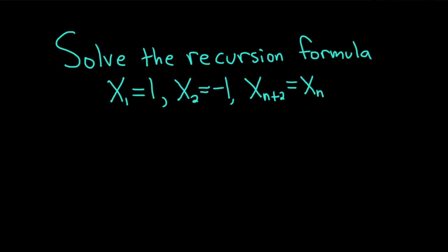Hi, in this video we're going to solve a recursion formula. This one is interesting because we're given the first two terms. The first term is 1, the second term is negative 1, and then we're told that x sub n plus 2 is equal to x sub n. So let's go ahead and work through this and see if we can come up with a nice formula.